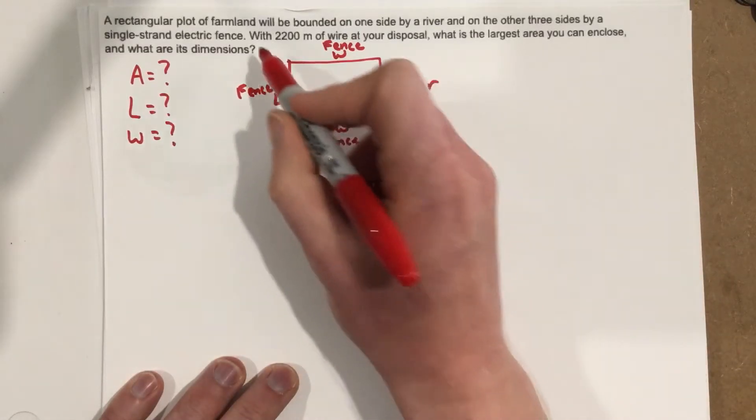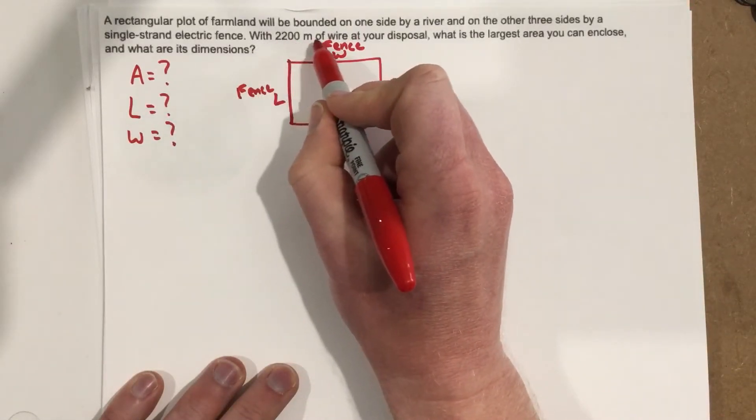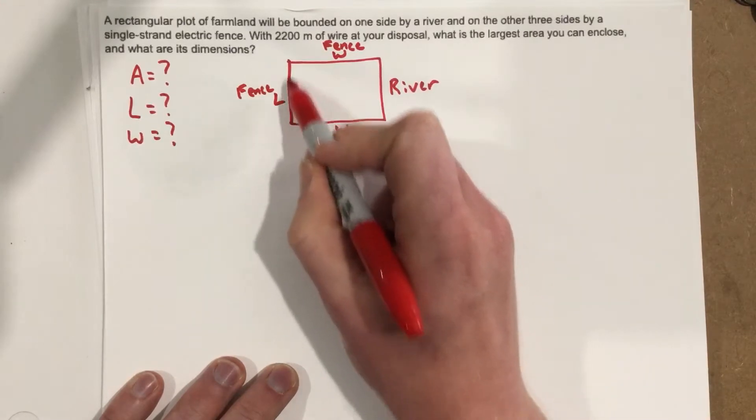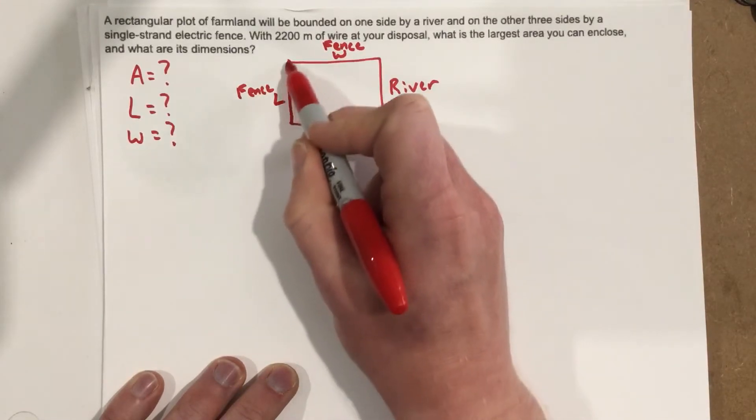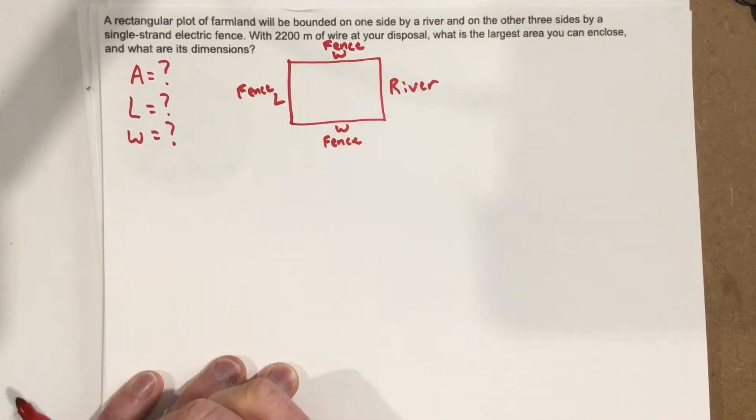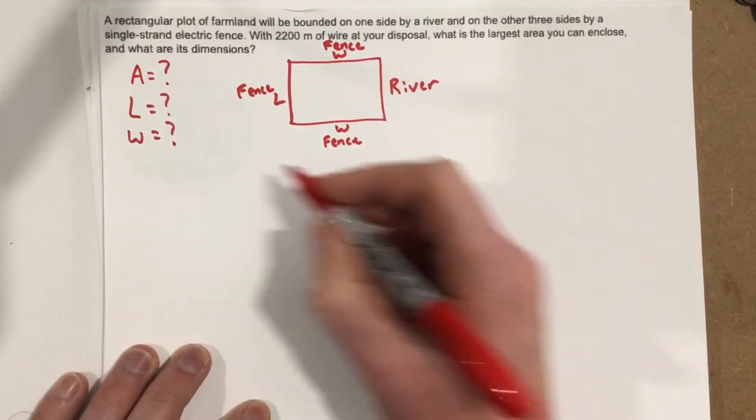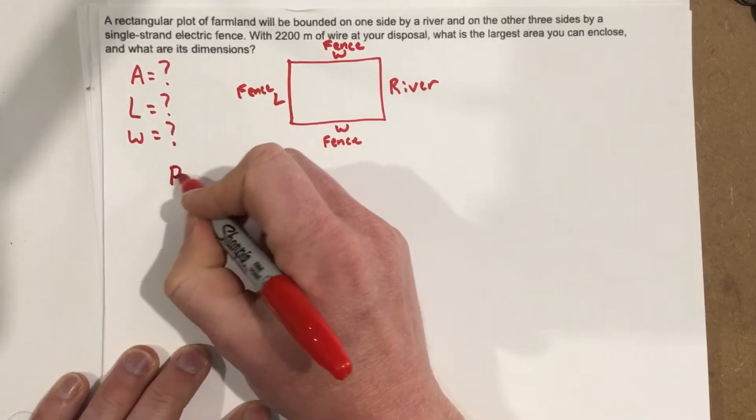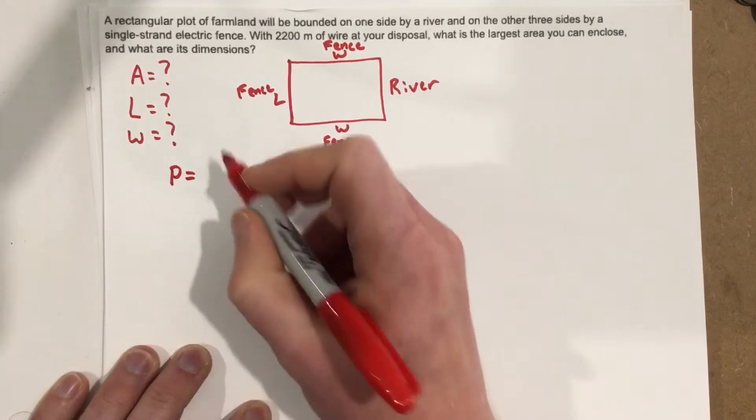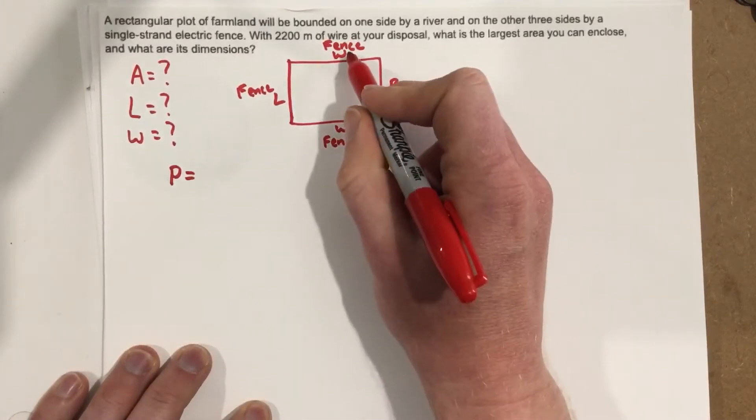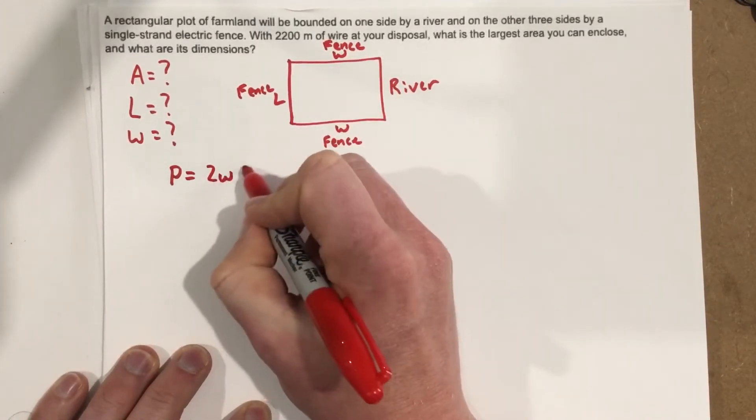So it gives us some stuff in the problem, it says 2,200 meters of wire. Well that's going to be used to go around the outside, so that's a perimeter equation. So we can say the perimeter is going to equal W plus W, which is 2W plus L.